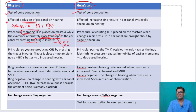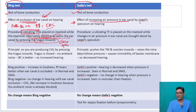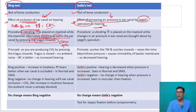In Gelle's test, we increase the air pressure in the ear canal by using a Siegel's speculum and test the effect on hearing by pressing the bulb of the speculum.